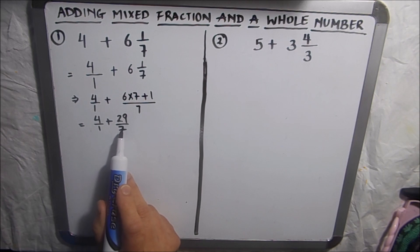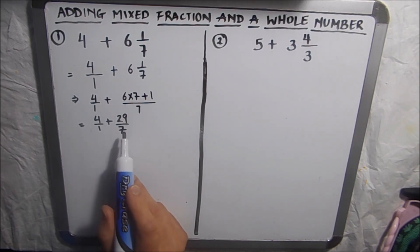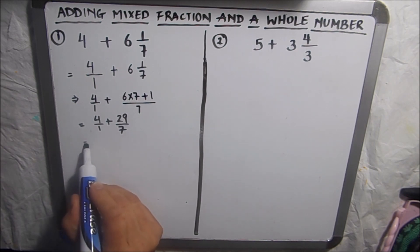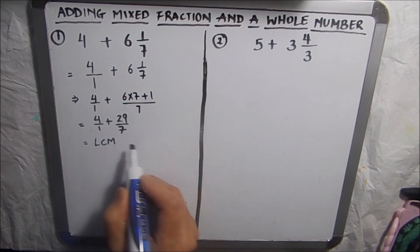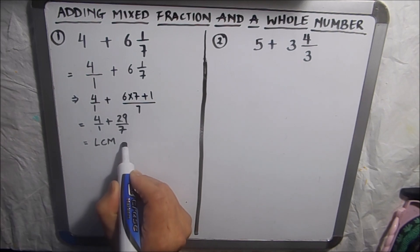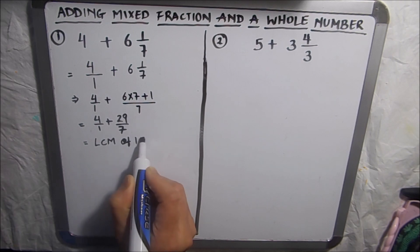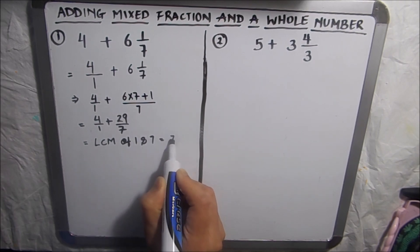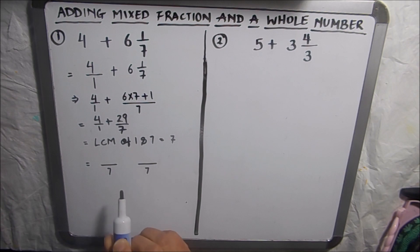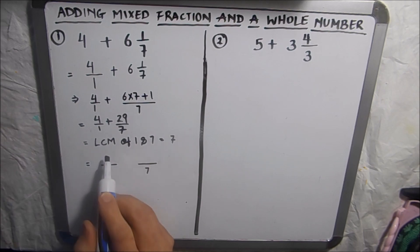Now we have a whole number with a denominator of one and a fraction, so we will follow the same steps as when we add two improper fractions. First, we'll take the LCM. The LCM of 1 and 7 is going to be 7.